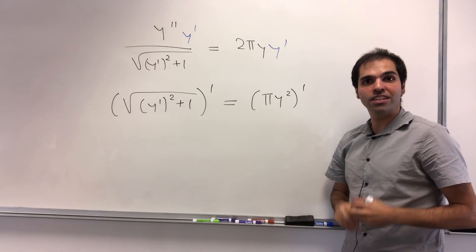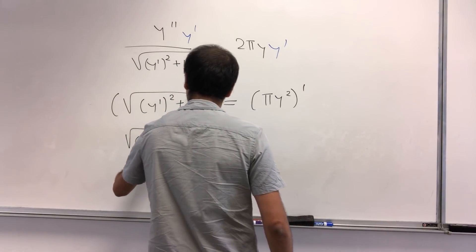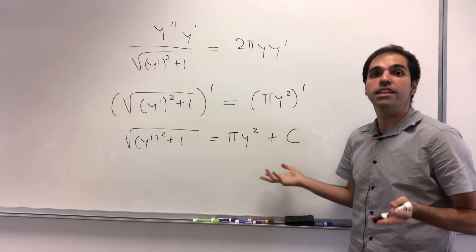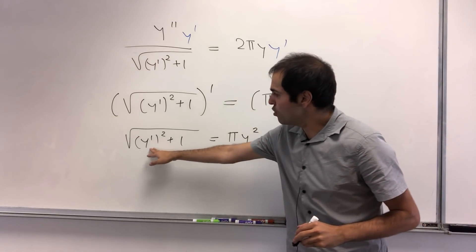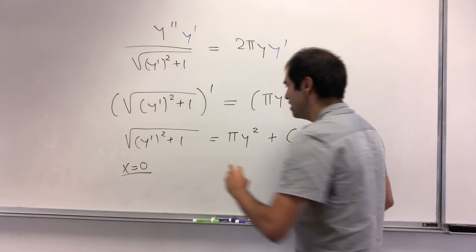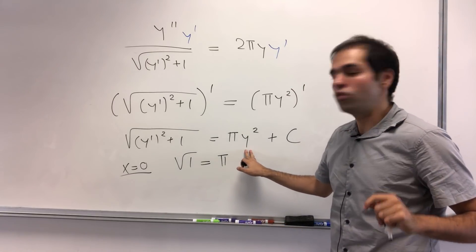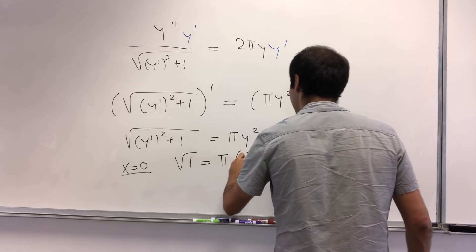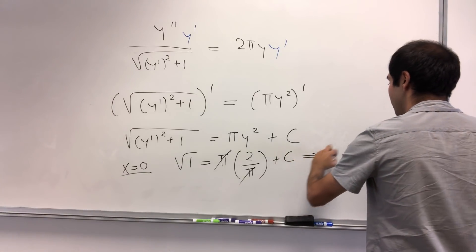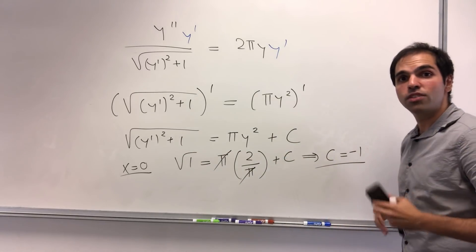If the derivatives are equal, it means the functions are equal up to a constant. So we get √(y'² + 1) = πy² + C. Now let's use initial conditions. Plugging in x = 0, remember f'(0) = 0, so we get √1 = π · (√(2/π))² + C, which gives 1 = π · (2/π) + C = 2 + C. So the constant is −1, and we have √(y'² + 1) = πy² − 1.